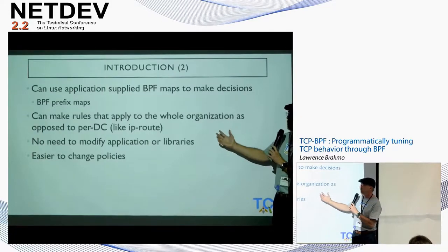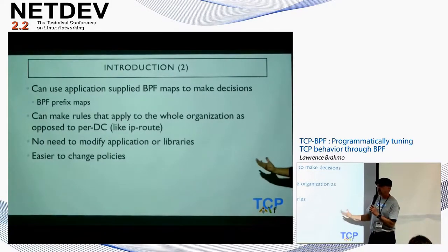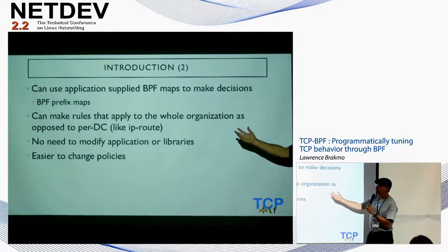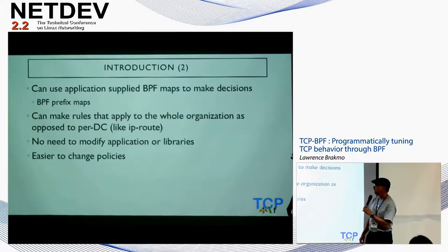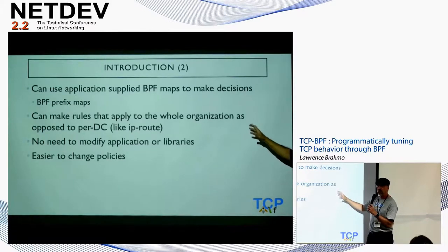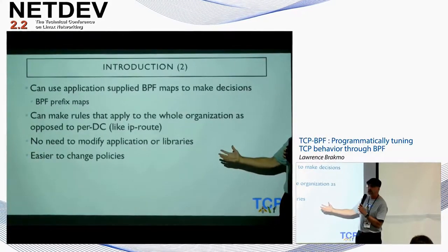We can make rules that apply to a whole organization much more easily because we have a program to make decisions, as opposed to having IP route rules with IP prefixes. We also don't need to modify the applications or libraries. This is a separate BPF program that we load, so it's a lot easier to change policies.